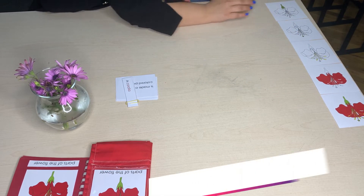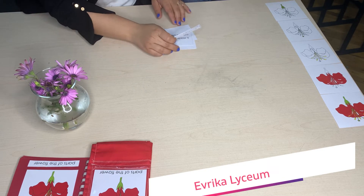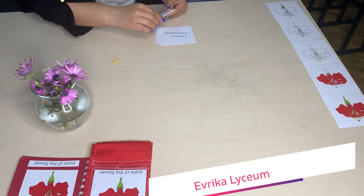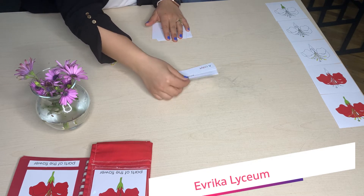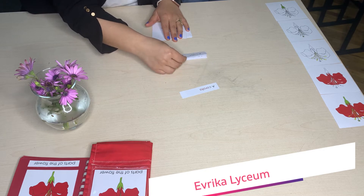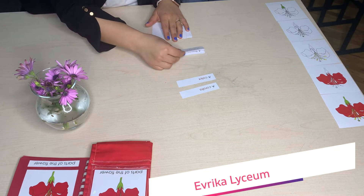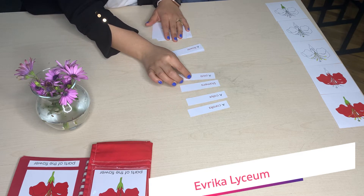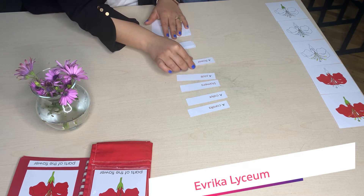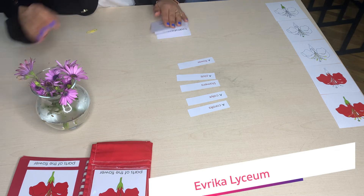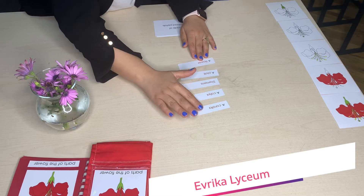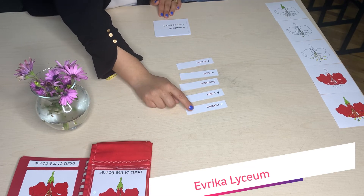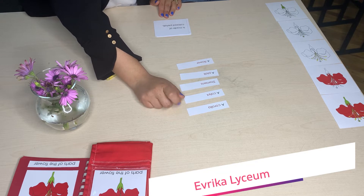We look at our definition cards — these are the ones we need to define. Let us see what we have: corolla, a calyx, stamens, a pistil, a flower. These are the ones we need to define, and we read and match each one with the picture.